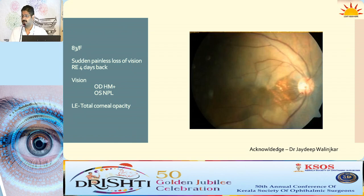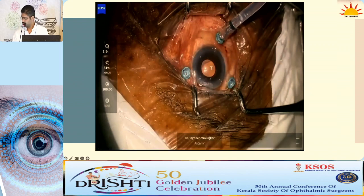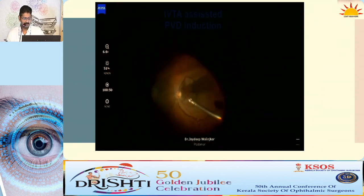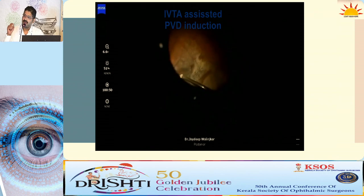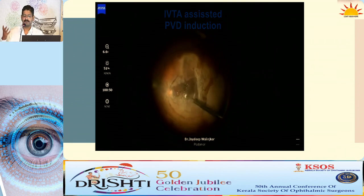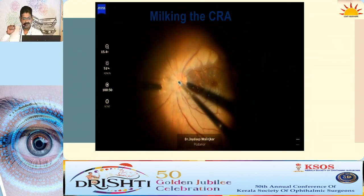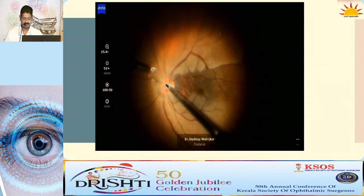Getting surgical fitness in such a case is very difficult. She was subjected to vitrectomy. This is a hypotony vitrectomy where pressures are kept at 5 to 10 mmHg. Initially no PVD was present, so IVT was used to stain the vitreous, PVD was induced, and a mid-peripheral vitrectomy was done. Then with a soft-tip cannula, compression was applied over the central retinal artery to try to move the embolus toward the periphery.